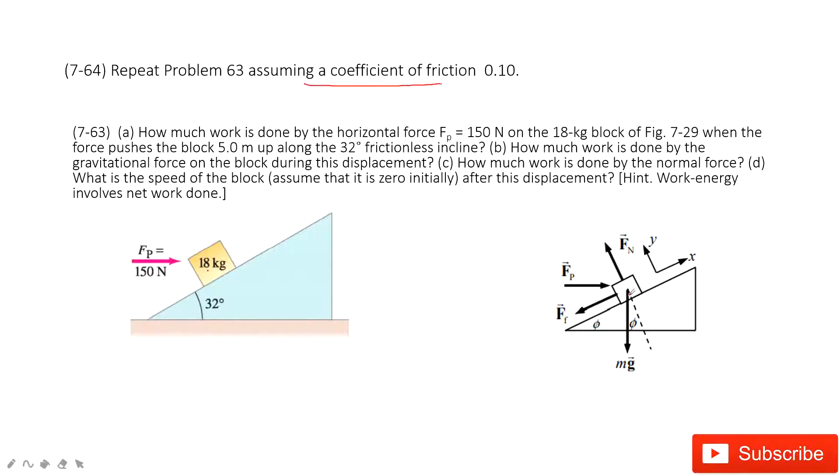We assume the coefficient of friction is 0.1. That means in this problem we need to consider the friction force. In this case, because there is a force acting on it to push it up, we can see the friction is pointing down.